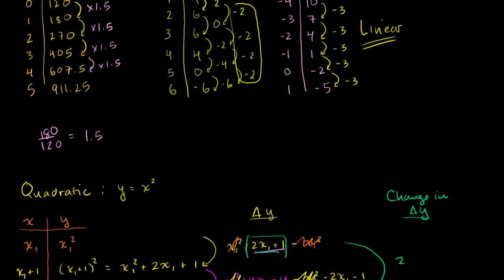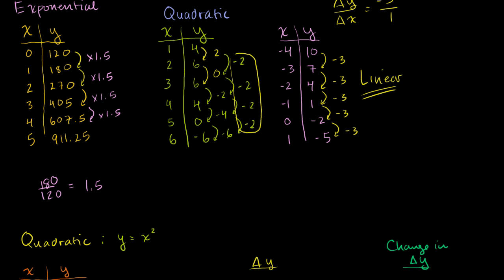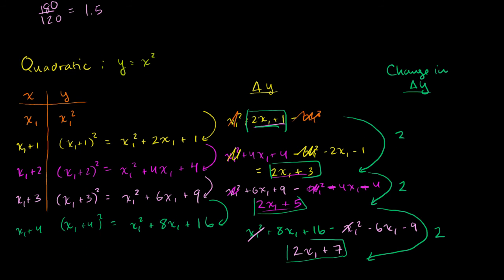So for y equals x squared, no matter which x₁ you pick, as long as you keep increasing by 1 — or any constant number — the change in the change of y is constant. This is completely analogous to what we did before. If you have time, you can prove this for the more general case of y equals ax squared plus bx plus c, or incrementing by any arbitrary constant k. The algebra gets a bit hairier, but it should still work.